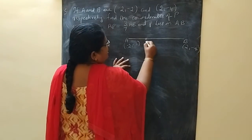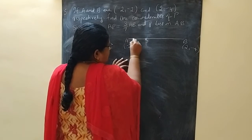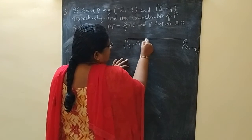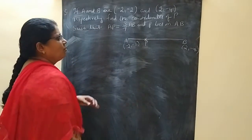Somewhere here we are marking the point P. What is the condition? This length, this much length is 3/7 part of AB.